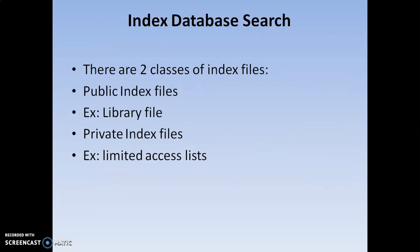Next is index database search. Index database search contains a searching procedure working on two classes of index files: public index files and private index files. Public index files are like library indexes where all books are kept in order and that indexing is publicly accessible. The best example of public index files is library files where the index is correctly provided.